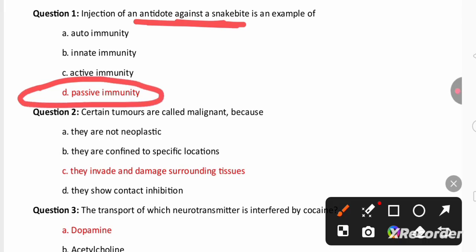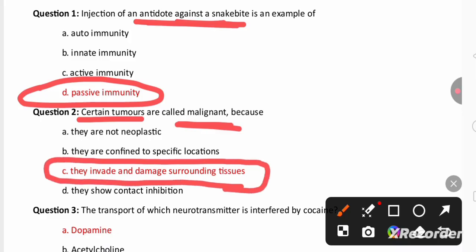Second question also from human health and disease. Certain tumors are called malignant tumor because they have a capacity of doing metastasis. Metastasis means spreading to the other tissue, surrounding tissues. They invade and damage the surrounding tissues also.